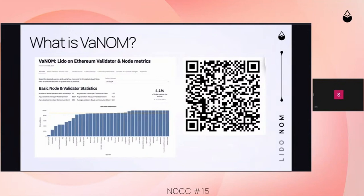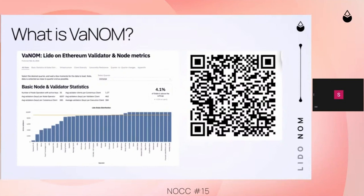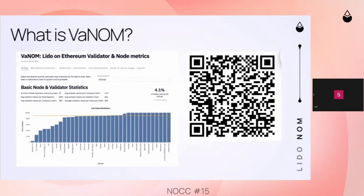The metrics include information about client diversity, infrastructure, geolocation, jurisdiction dispersion, and since last quarter — Q4 2023 — we are also including some preliminary metrics on censorship resistance. It's just MinBid right now, but we're looking to expand this particular segment.